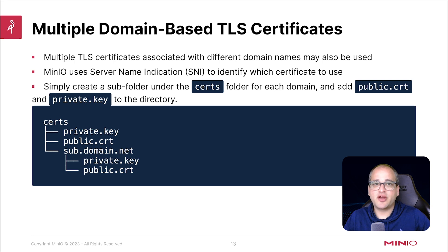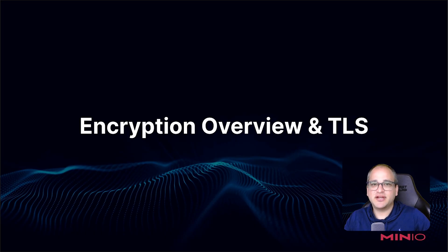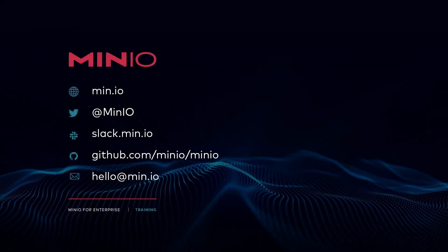In some cases, you might want your MinIO deployment to be available on multiple different subdomains. To do this, simply create a subdirectory under the certs directory for each subdomain and place the key and cert files for each domain into the appropriate subdomain folder. Since MinIO uses a TLS extension called SNI — Server Name Indication — under the hood, the MinIO server will present the client with the appropriate TLS certificate based on the hostname it's attempting to connect to, right at the beginning of the TLS handshake process. That's really the basics you need to know about TLS certs on MinIO. In the next video, we're going to dive into the topic of KES and show you how it's used to configure encryption at rest.